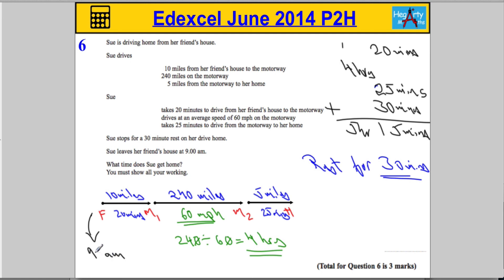If she leaves at 9 a.m., what time does she get home? Let's count up five hours from 9: 10, 11, 12, 1, 2. Then add 15 minutes, which gives us 2:15. And that's p.m., because we've passed 12 o'clock. So she arrives home at 2:15 p.m.